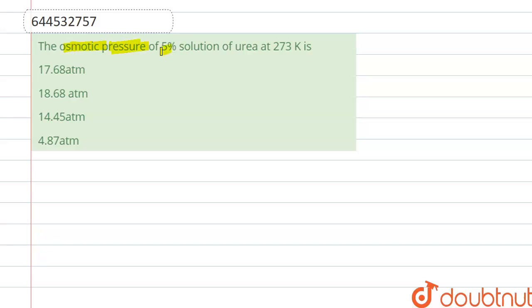the osmotic pressure of 5% solution of urea at 273 Kelvin. We have to calculate osmotic pressure, which